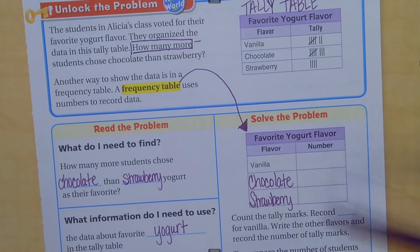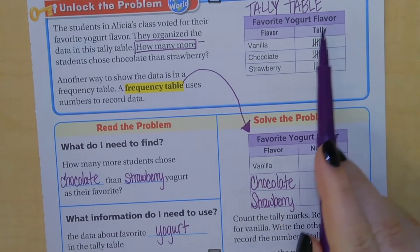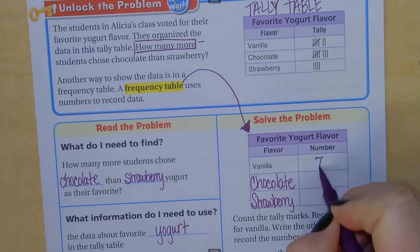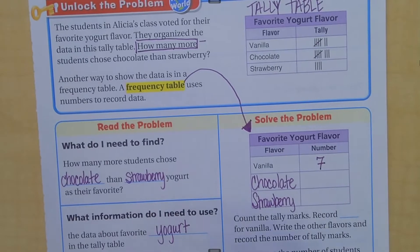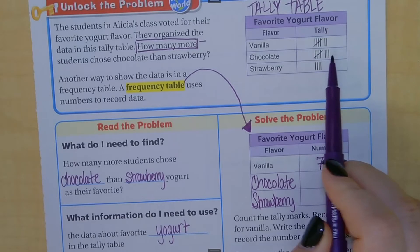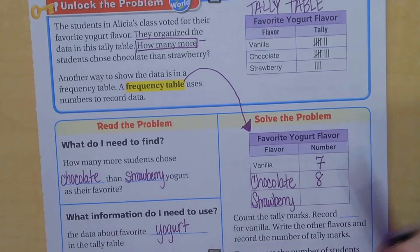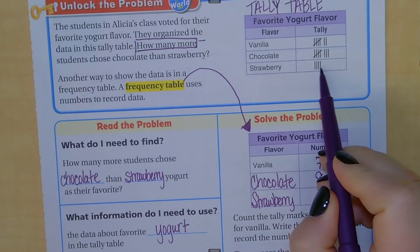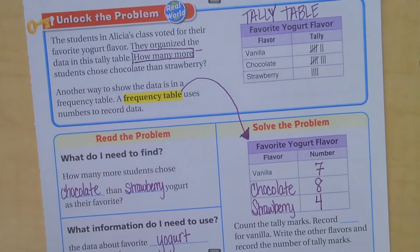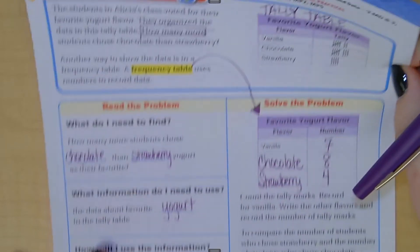A frequency table just shows the number — that's it. So how many students voted for vanilla? Five, six, seven — seven students. How many students voted for chocolate? Five, six, seven, eight — eight students. And how many students voted for strawberry? One, two, three, four — four students. We have converted our tally table into a frequency table, and that is all you have to do.